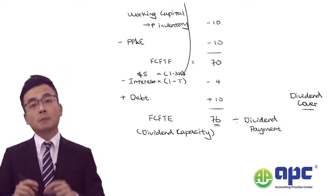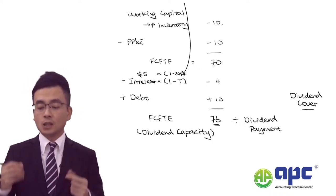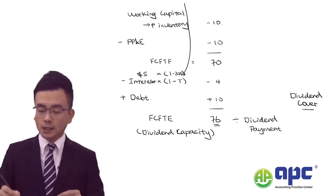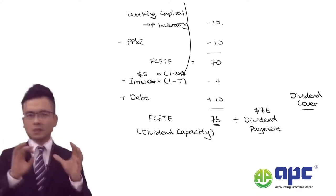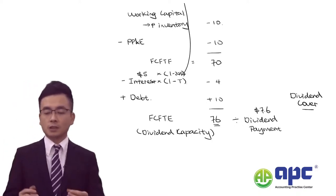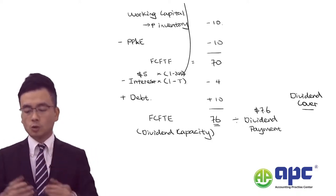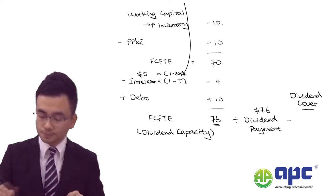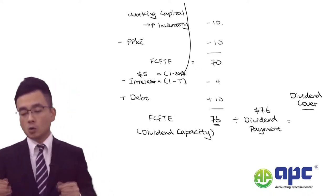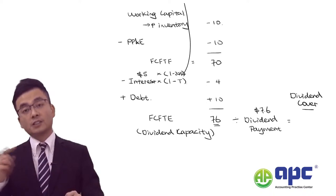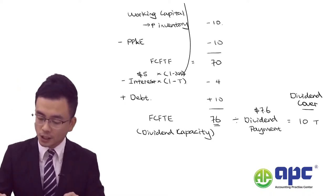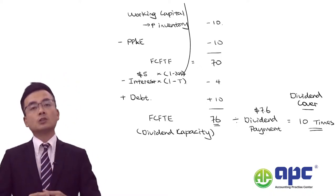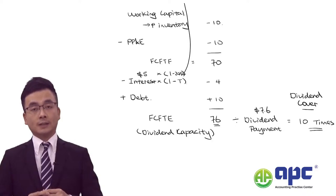Let's say the business has paid $7.6 in dividends to all shareholders. We then have 76 divided by 7.6, which is 10 times — representing the ability to pay off cash flows to our shareholders.